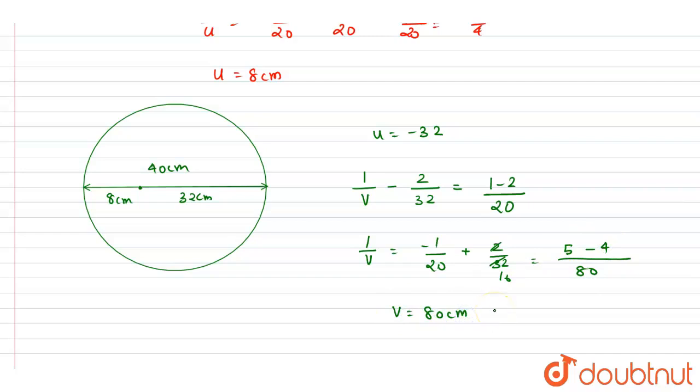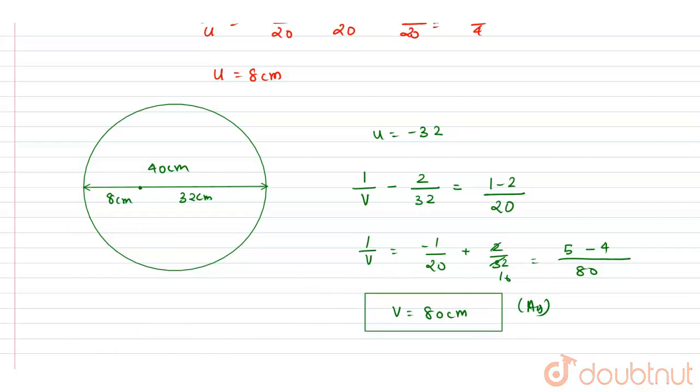So v equals 80 centimeter. When seen from the other surface, the object will appear at a distance of 80 centimeter, and this is the answer to this question.